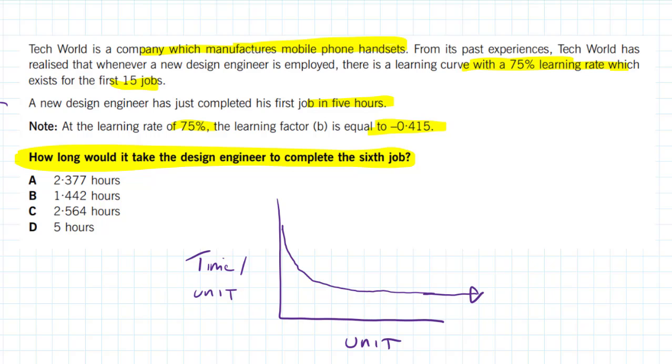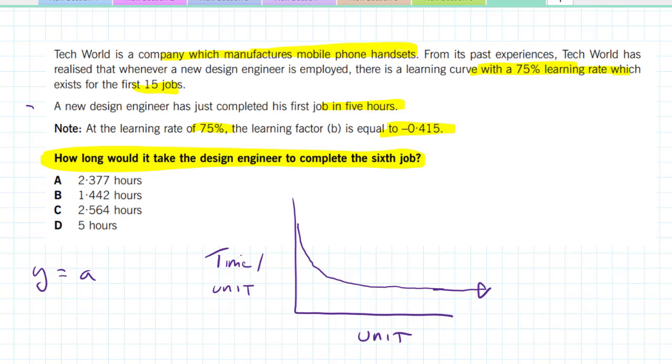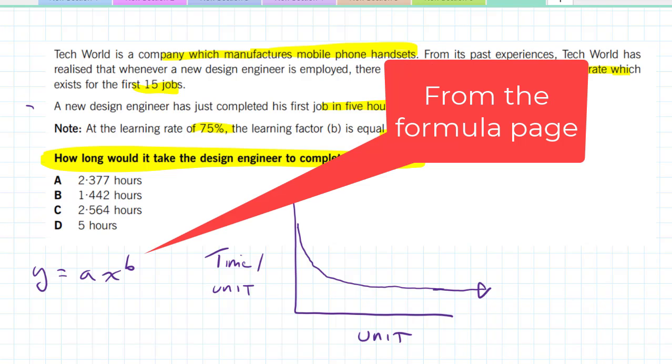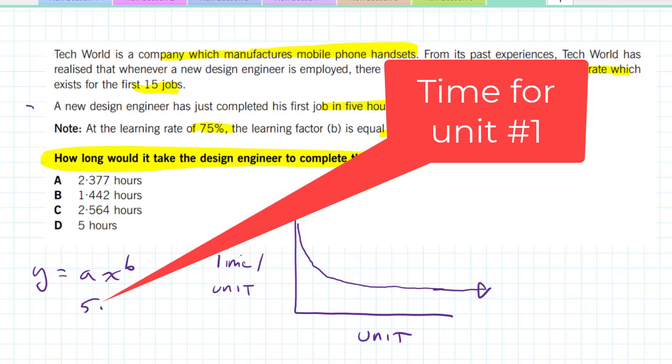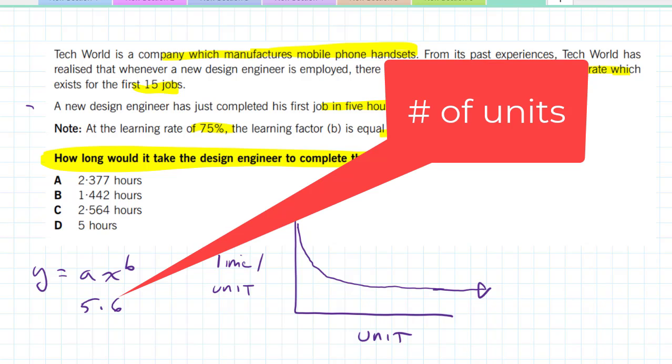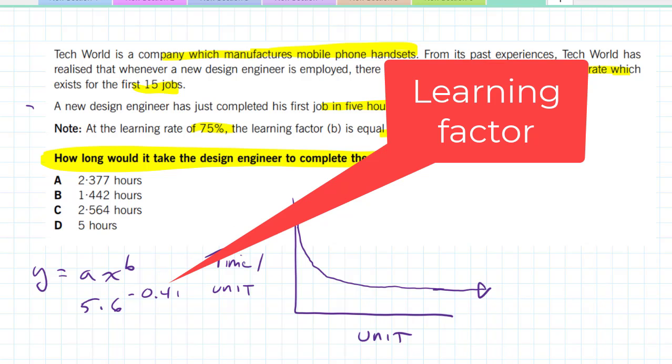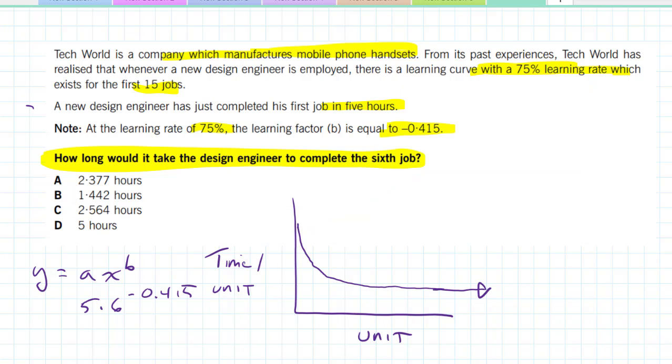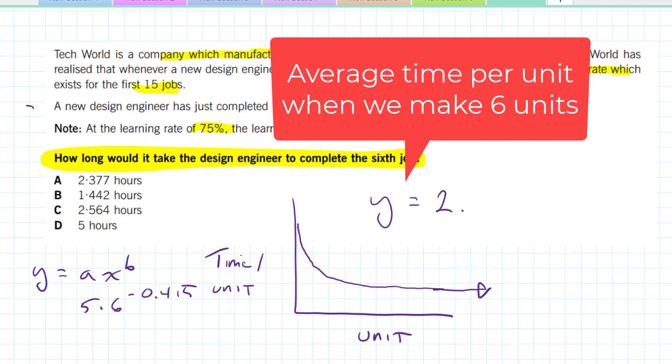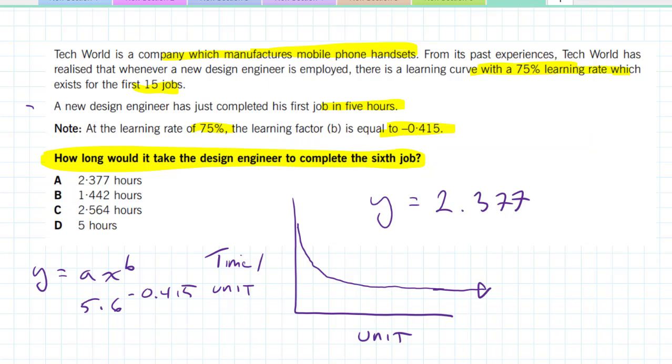The average time when we do six units. Okay? So, I'm going to use that formula. The average time that's going to be that Y is equal to AX to the power of B. We've got the A, which is five. We've got the X, which is six to the power of negative 0.415. Let me put that into my calculator. And Y is equal to 2.377. That is the average time when we do six. Now, look at this. It's not going to be five. It's going to be lower, isn't it? Now, the average time when we do six is this one. We don't want the average time. We want the time of number six. So, it's not that one.